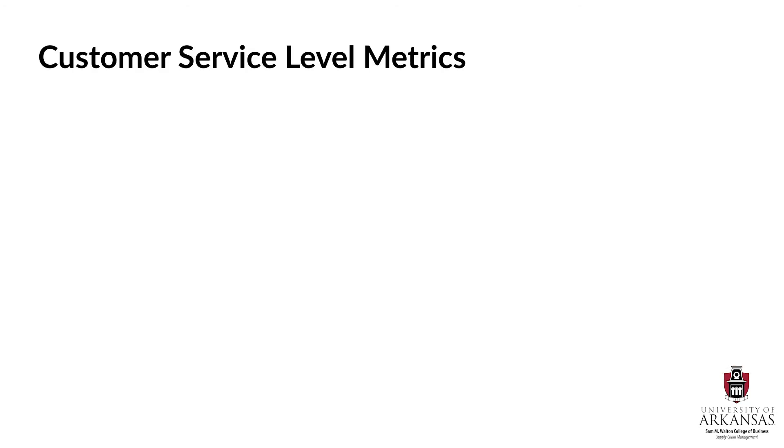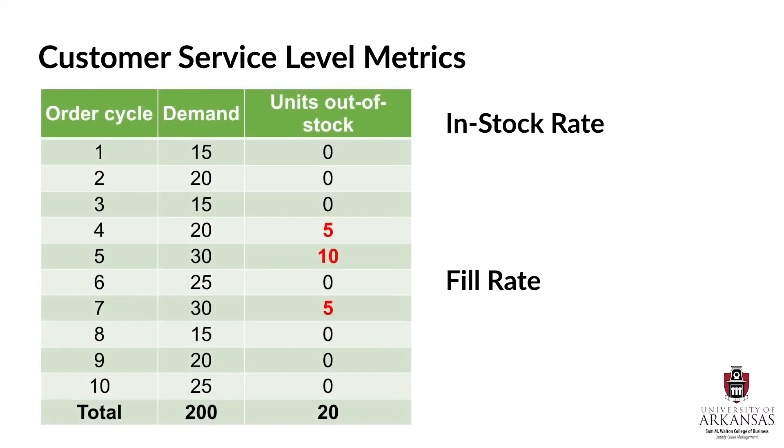Speaking of customer service levels, this may be a good time to talk about two key customer service metrics: the in-stock rate and the fill rate. It may be easiest to explain these using a simple example. Take a look at this data table. For each of 10 order cycles, we see how many units customers demanded and how many stockouts, if any, there were. In cycle number 4, for example, demand was 20 units, but we stocked out by 5. This means that we were able to sell only 15 units in this cycle.